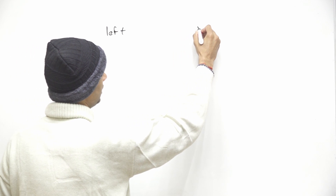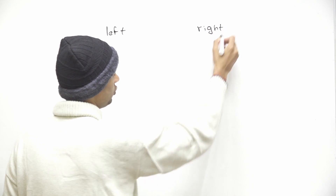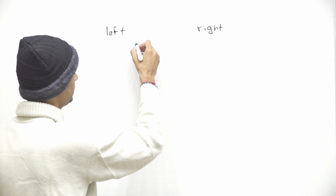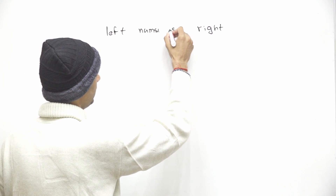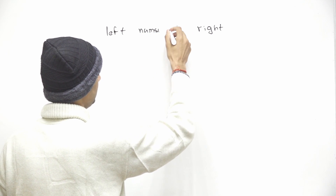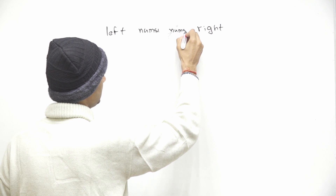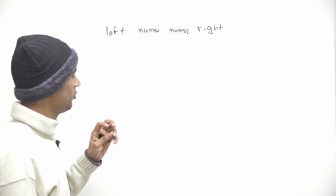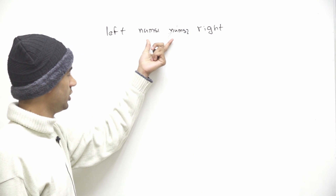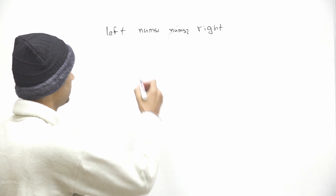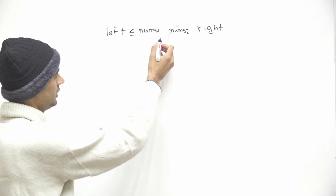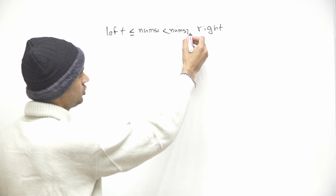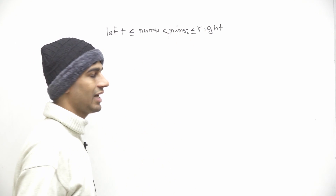So we have two integers left and right, and we have to find out two more integers nums1 and nums2. These two numbers should follow three conditions. The first condition is that left should be greater than or equal to nums1, and nums1 should be smaller than nums2, and nums2 should be smaller than or equal to right.